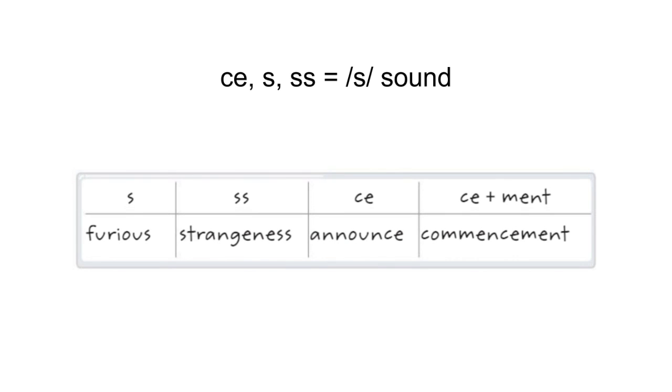The first word is an example with just S on the end: furious. The next word is an example with SS on the end: strangeness. Notice that the S is paired with the suffix -ness, so we have strangeness.